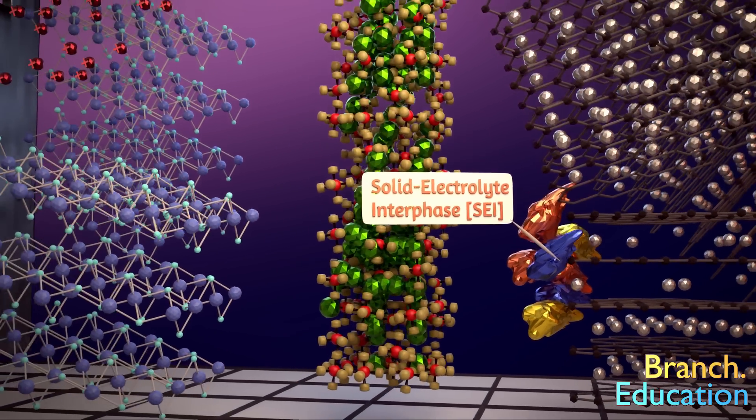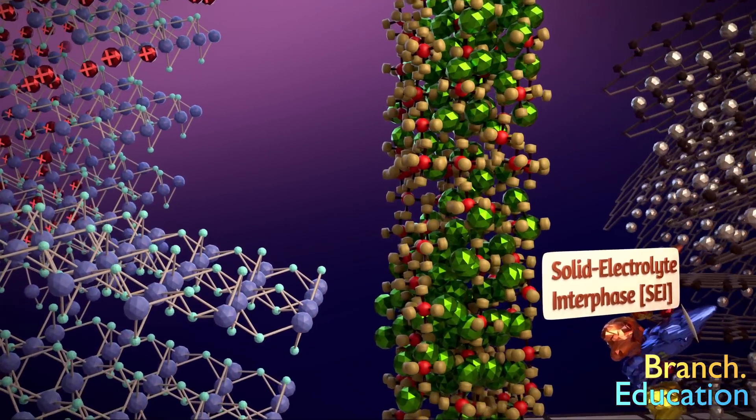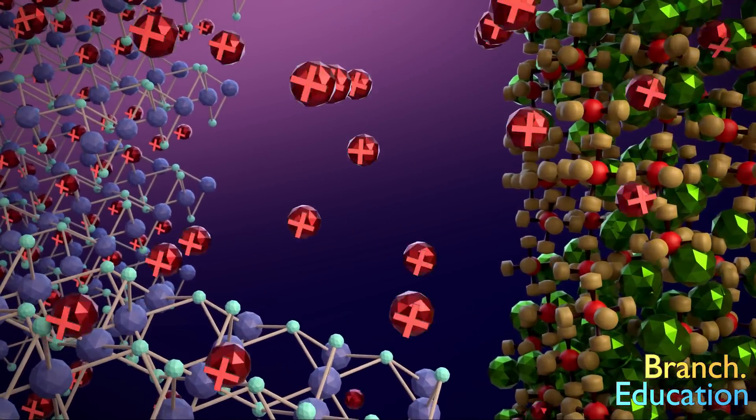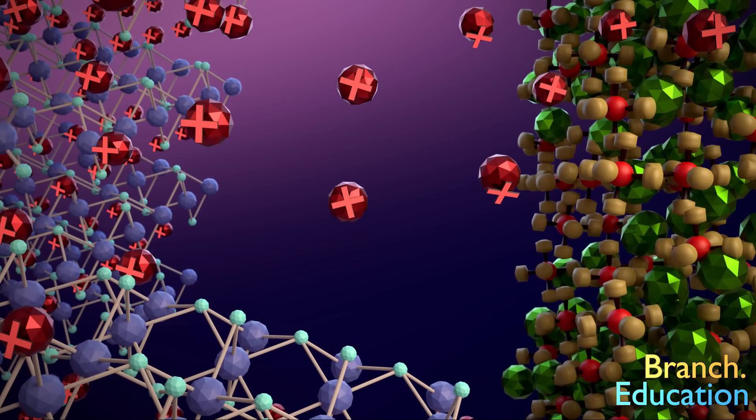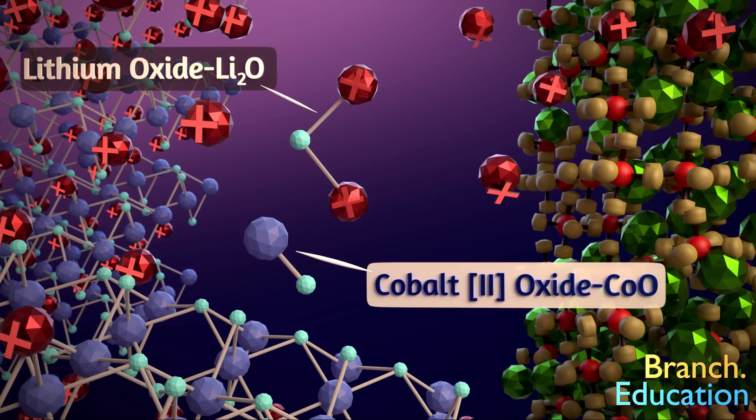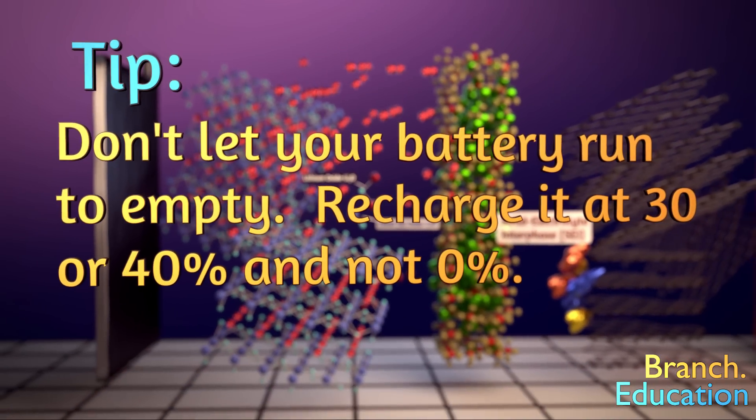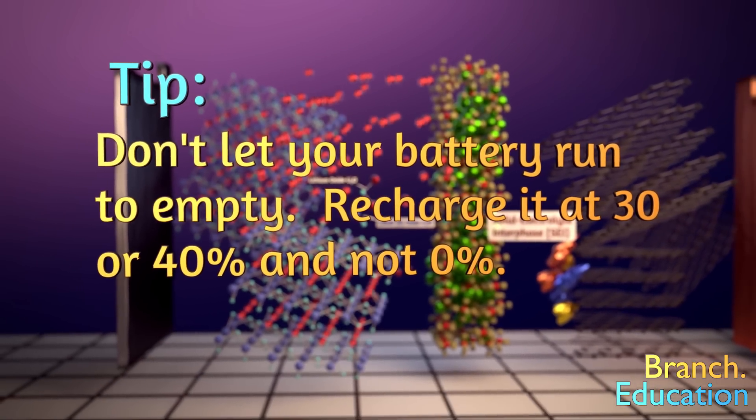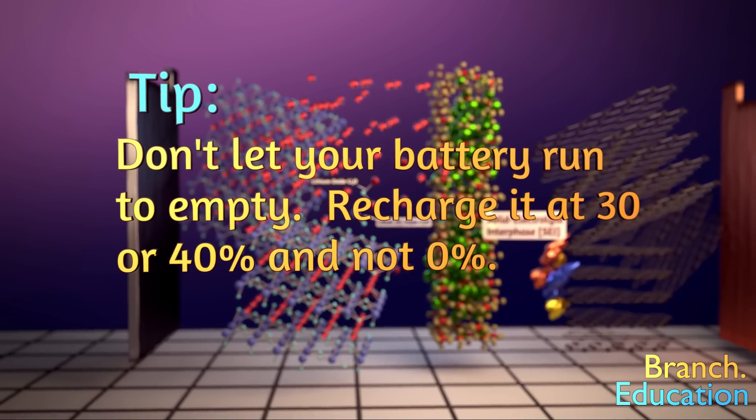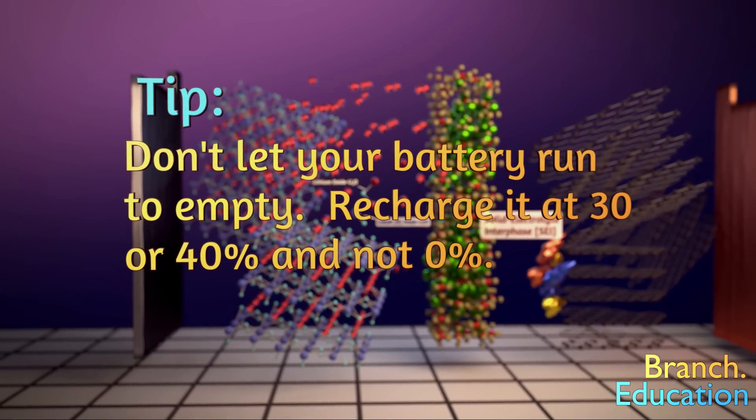Another reason is that when you fully discharge your battery until it's dead, it can result in too much lithium on the cobalt side, which causes the irreversible generation of lithium oxide and cobalt 2 oxide. These compounds are stuck in that state, which thereby reduces the amount of lithium and cobalt for future use. So one tip is to not let your battery run until it's empty. It's better to recharge your battery at 30 or 40% than to let it run until it's dead.